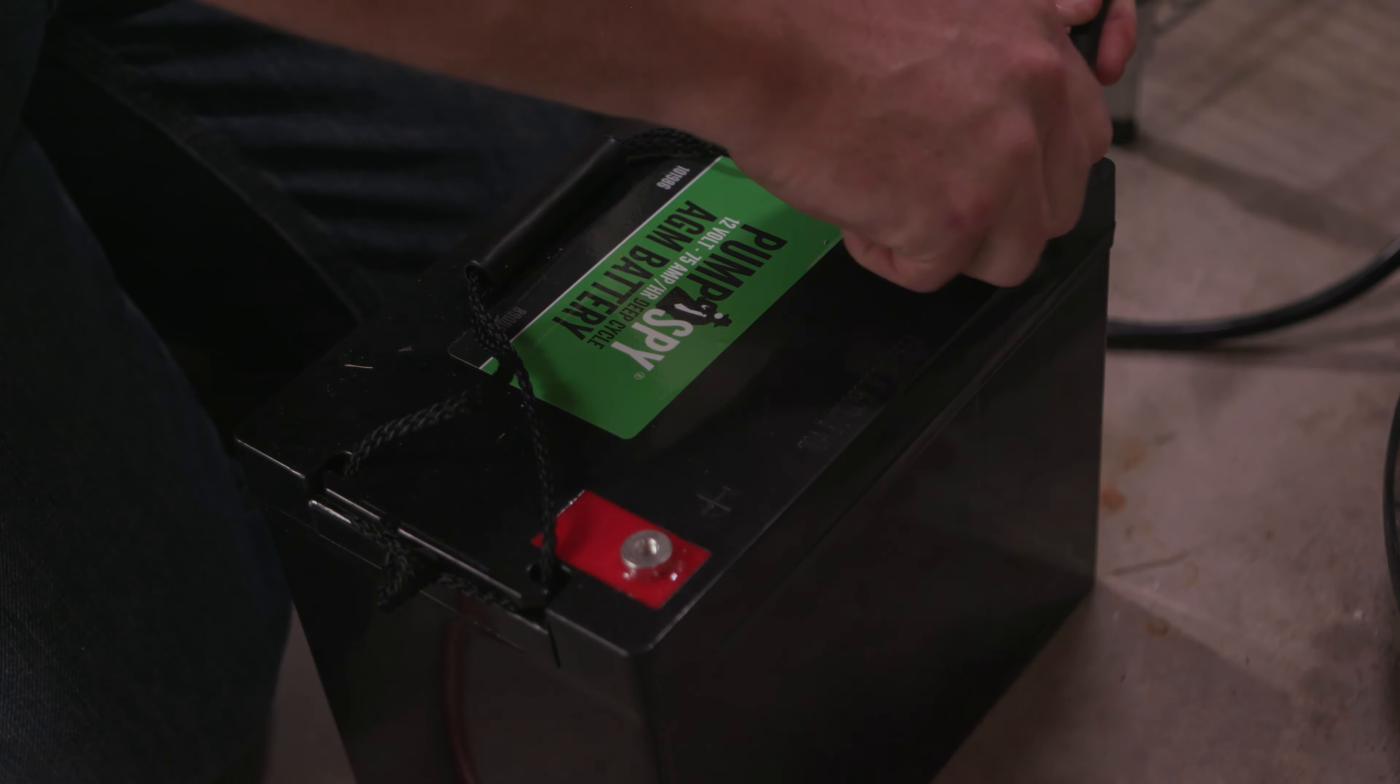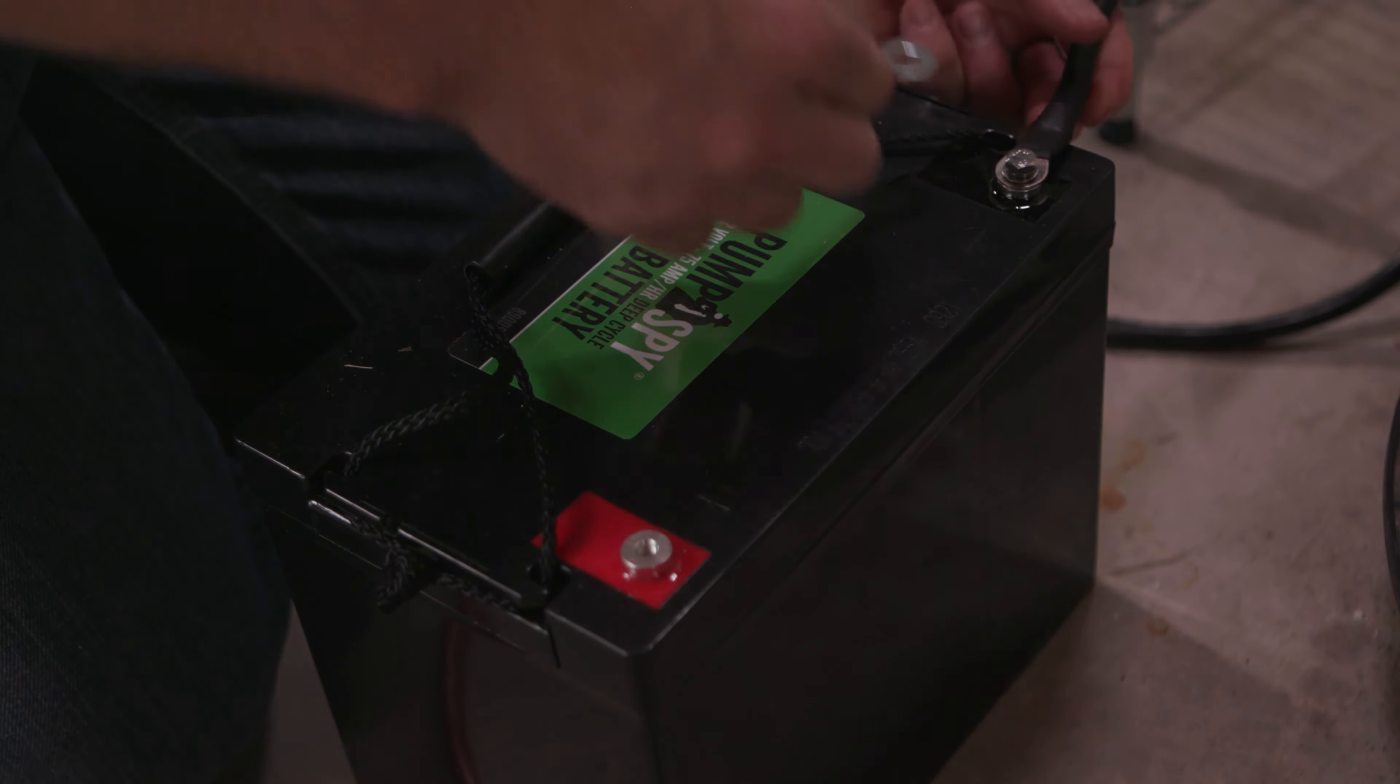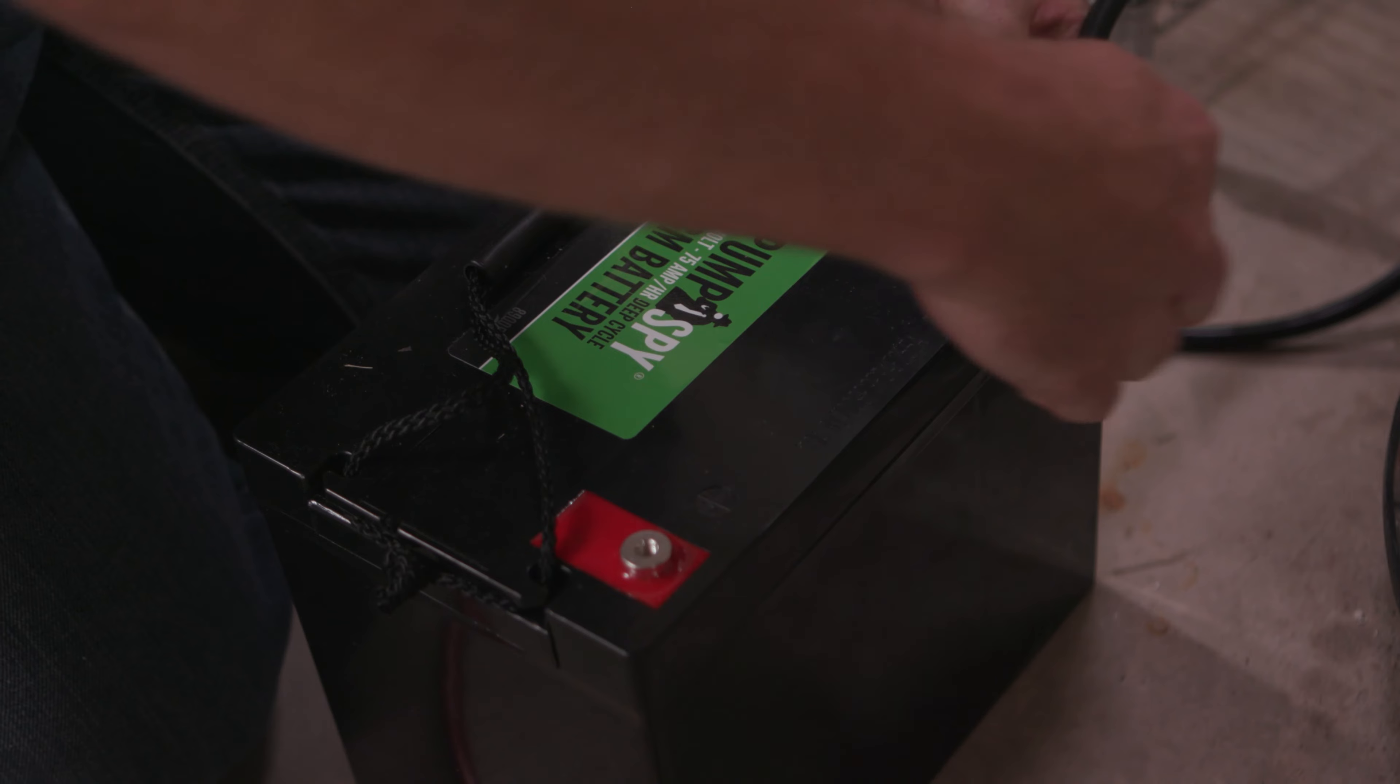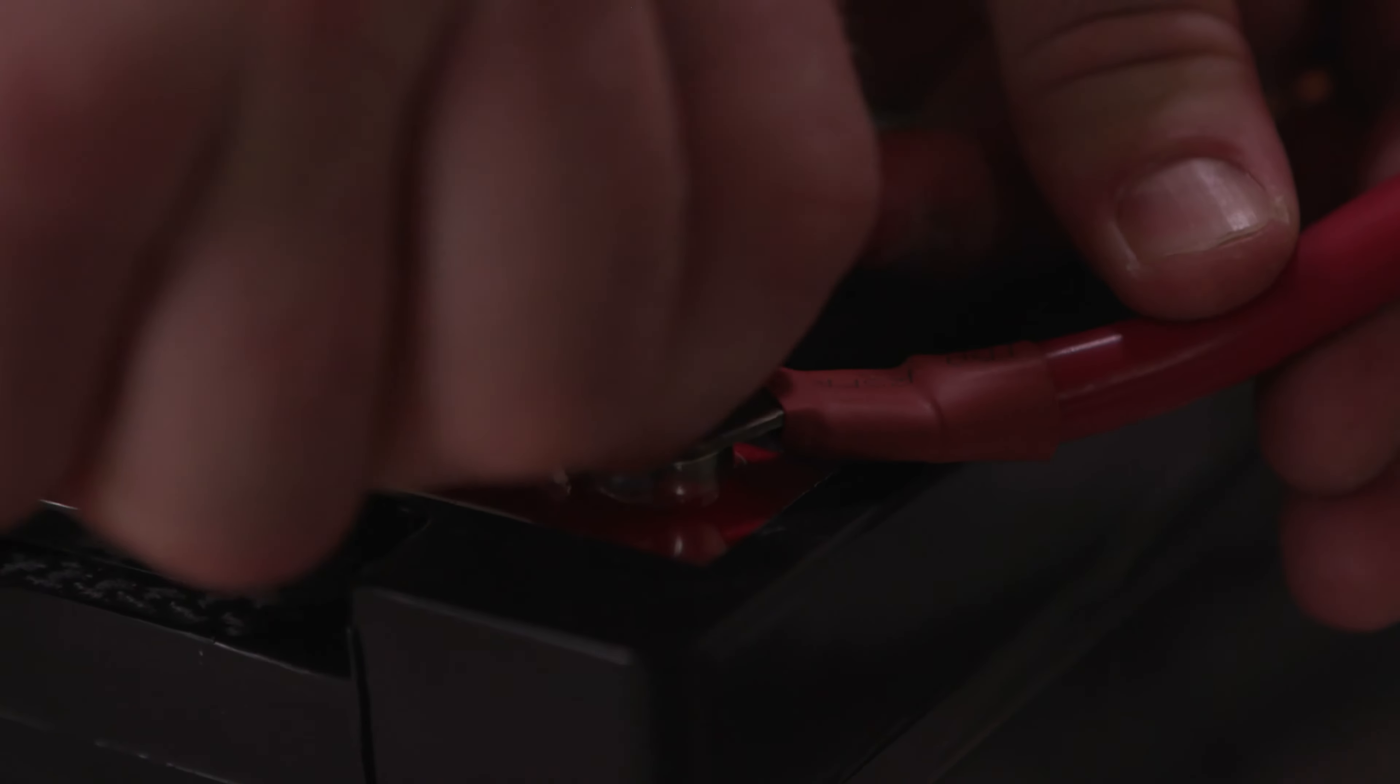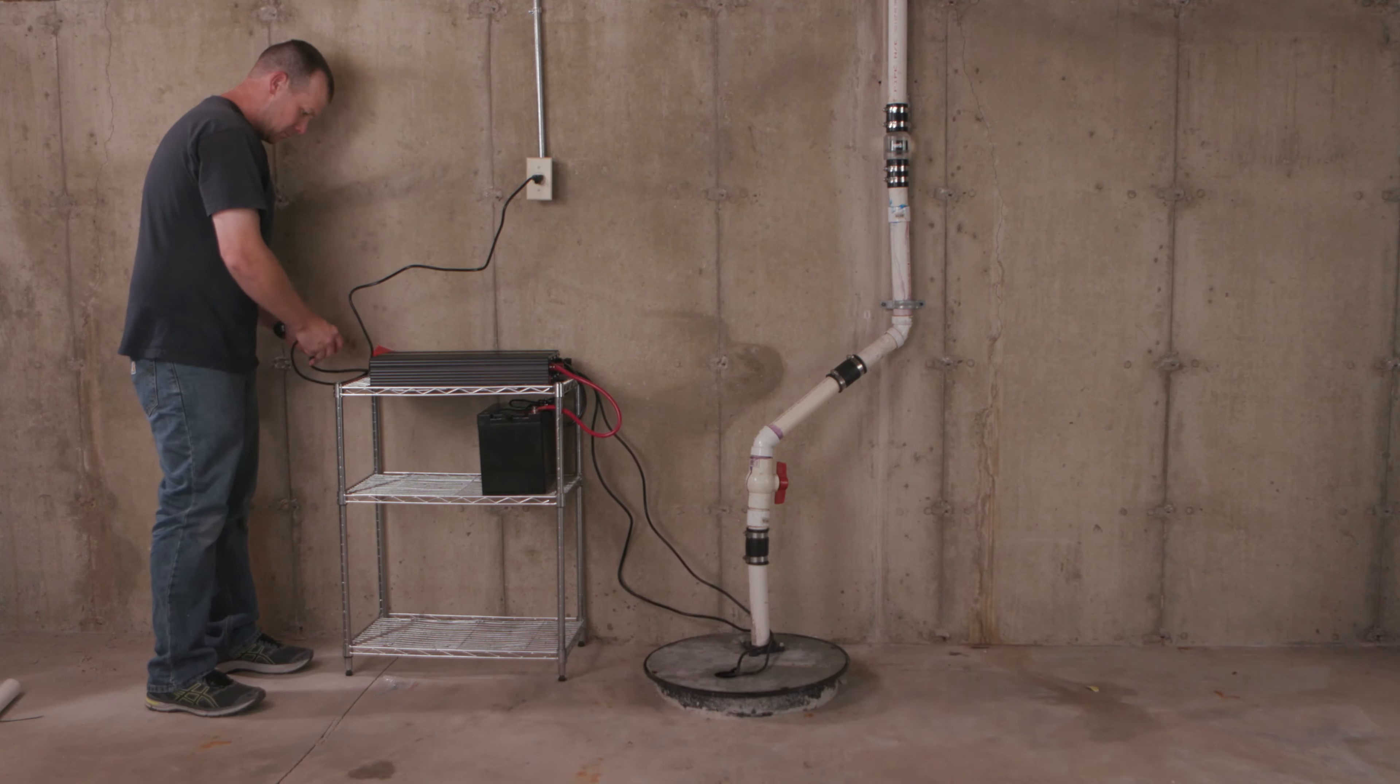Then, connect the battery leads to the battery. PumpSpy's 12-volt deep cycle battery is recommended. A tool may be needed to ensure a tight and secure connection. Do not over tighten.